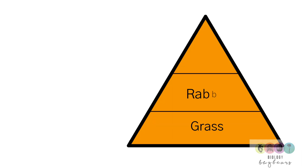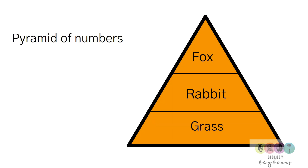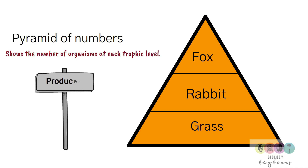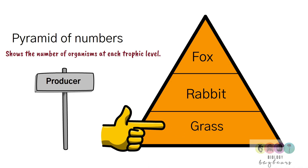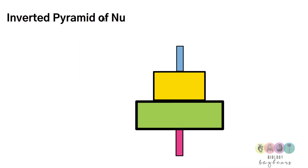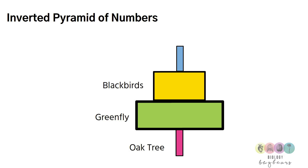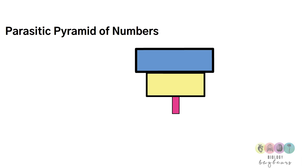Another diagram you encounter frequently is the pyramid of numbers, which represents the number of organisms at each trophic level. Always start with the producer at the base. Sometimes you get a distorted or inverted pyramid — for example, one oak tree as producer supports many organisms above it. You can also get a parasitic pyramid of numbers. Always use a ruler when drawing pyramids and be able to state their limitations.